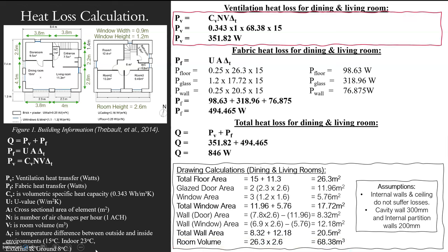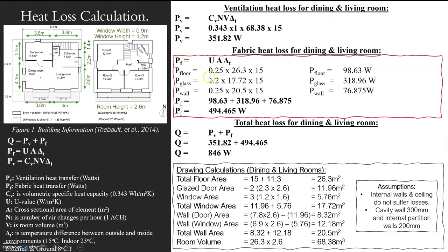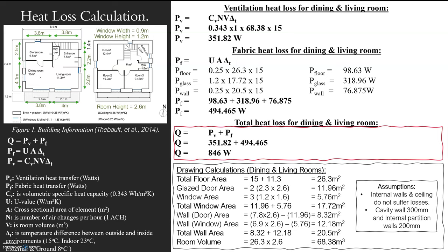Once I've got all that information, I literally plug it in — it's as simple as that. PV is my specific heat capacity, N is my number of air changes, volume I've determined, and my temperature difference between outside and inside. Lovely — I can just plug that in. For fabric, I've got my U-values for three different elements: my floor, my glass, and my wall. I separate them out, I've got the area for each, and I've got the temperature difference between each element and outside. I get my fabric heat loss and then add them all together.